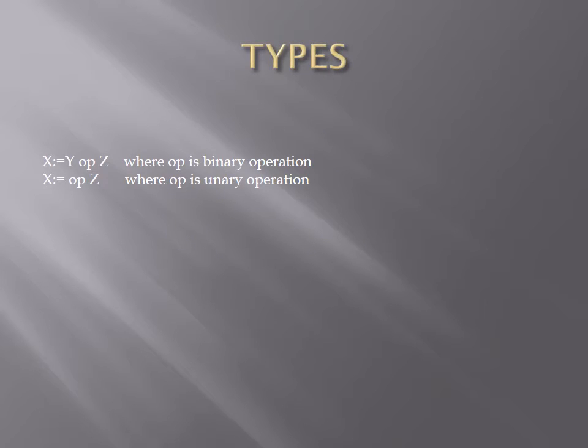Now we are discussing the types of Three Address Code. First is the assignment operator — if we are using an operator between two operands it is a binary operation. If the operator is written at the start or at the end, then it is a unary operation.